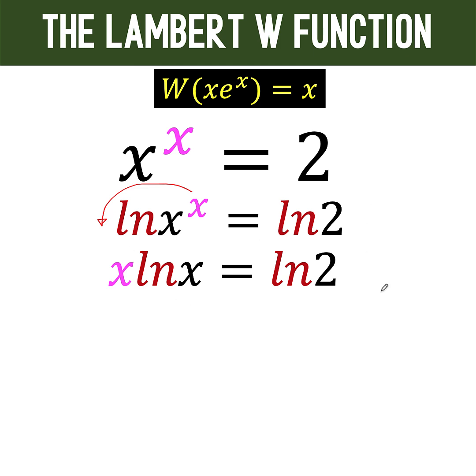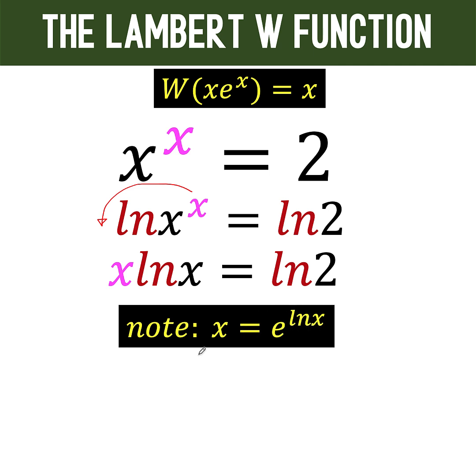Next, let's note that e raised to ln of x is just x because e and ln are inverse operations that can cancel each other out, thereby leaving only x as the value of the right side. Because of this, we can now replace this x by the right side here to arrive at e raised to ln of x times ln x equals the right side ln of 2.